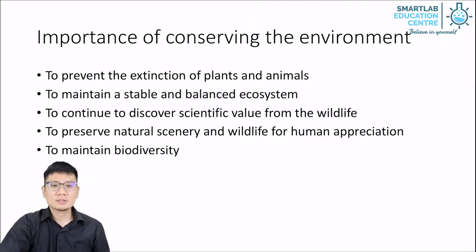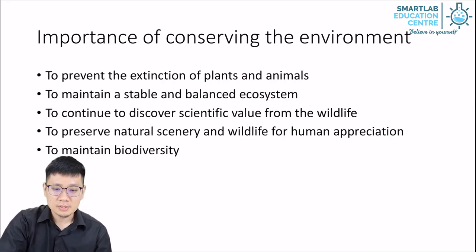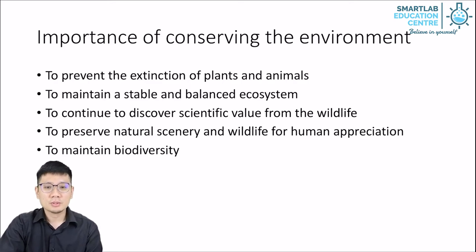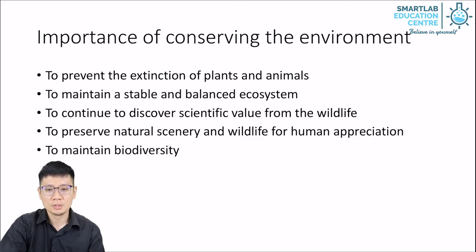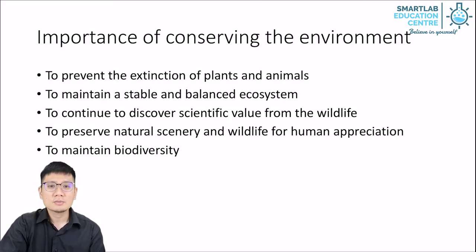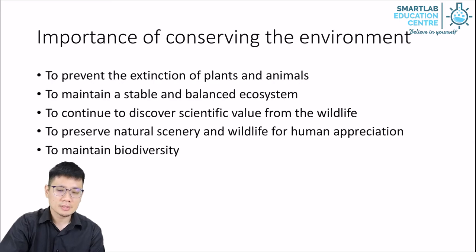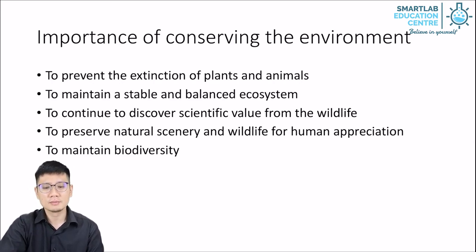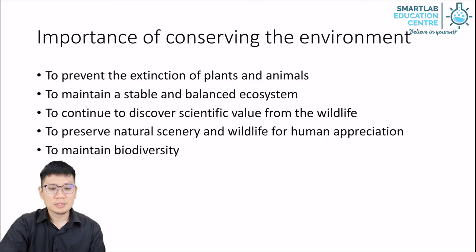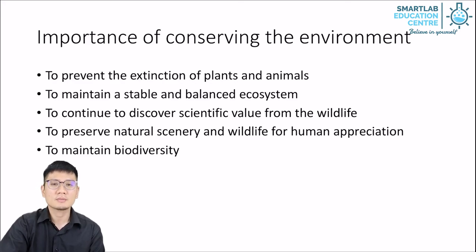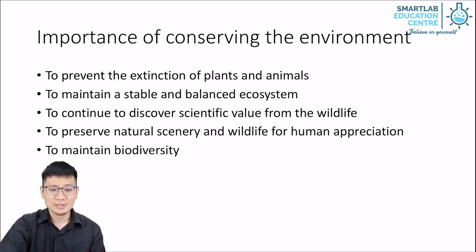After discussing those different types of relationships, I hope it's clear that the interaction between organisms within an ecosystem is very complex. There are many factors which we may not be able to account for whenever something in the environment changes, and this frequently leads to unintended consequences. Therefore, we have realized there is great importance in conserving our environment: to prevent the extinction of plants and animals, to maintain a stable and balanced ecosystem, to continue to discover scientific value from wildlife, to preserve natural scenery, and to maintain biodiversity.